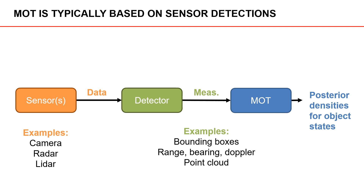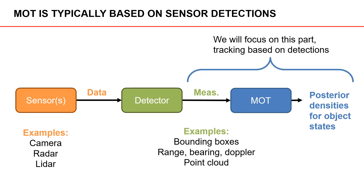The measurements that we get from the detector serve as input into a multiple object tracking system, here abbreviated MOT. The output from the MOT system is posterior densities for the object states. The focus of this course is on tracking based on detections. One important thing to note is that detectors work on a single frame of data — a single camera image, a single radar scan, or a single lidar scan. The MOT algorithm, however, works on detections from multiple frames, and these detections are processed sequentially.